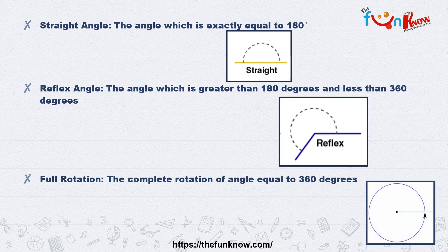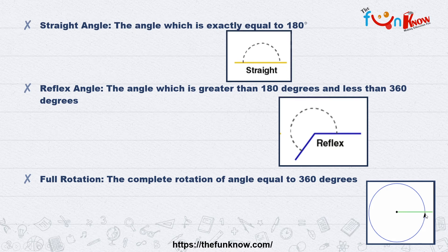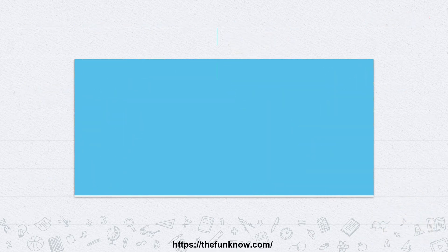The last type of angle is known as full rotation. The complete rotation of an angle is equal to 360 degrees, meaning the starting point and ending point of the angle are the same. As you can see in the figure, it is starting here, taking the whole rotation and coming back to the same point. This is known as 360 degrees of rotation.